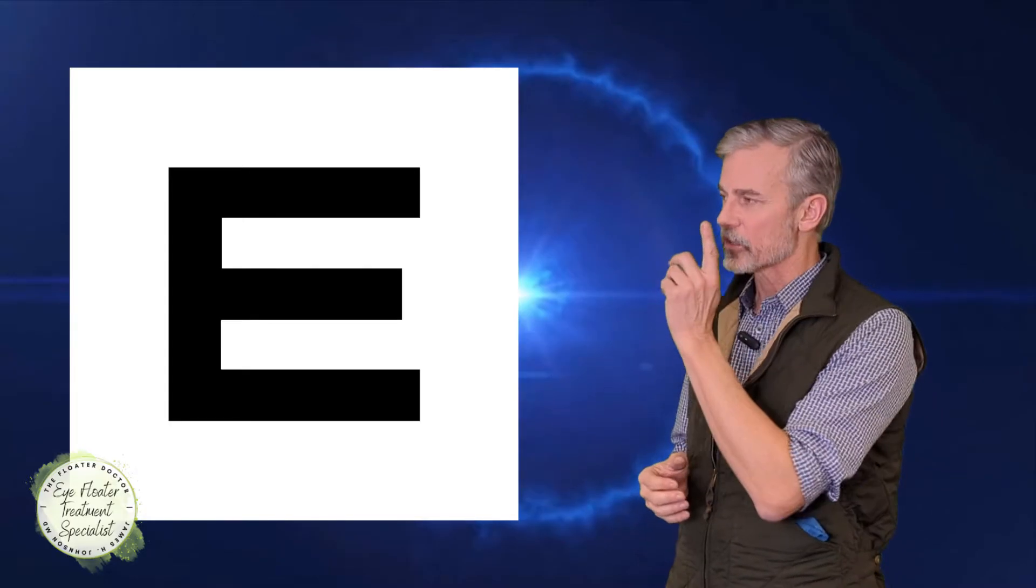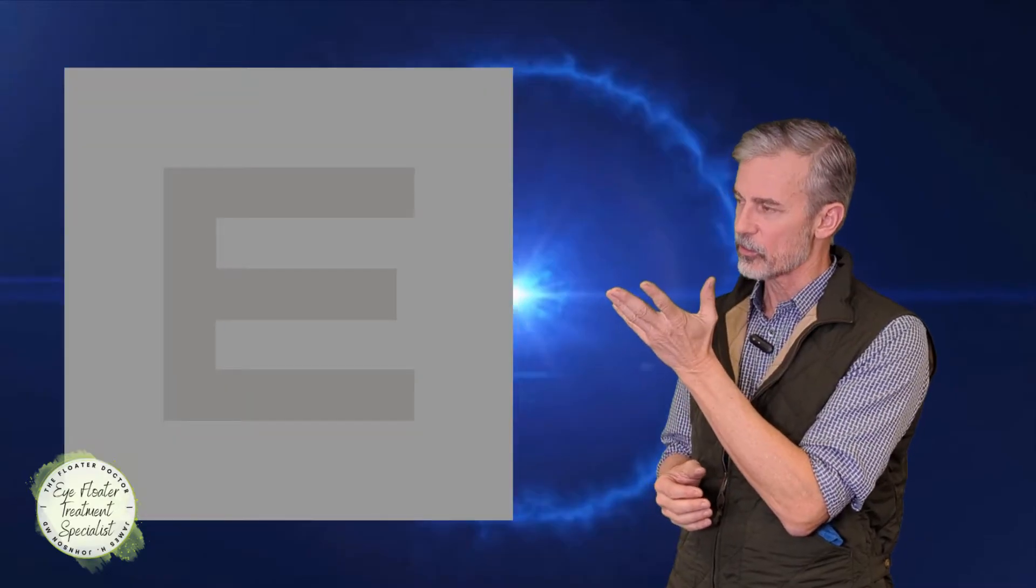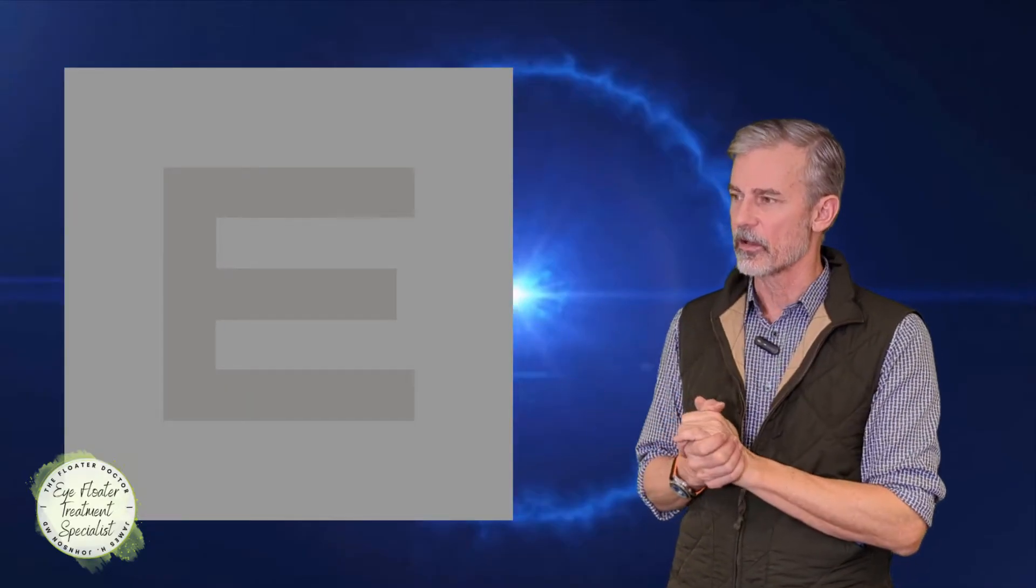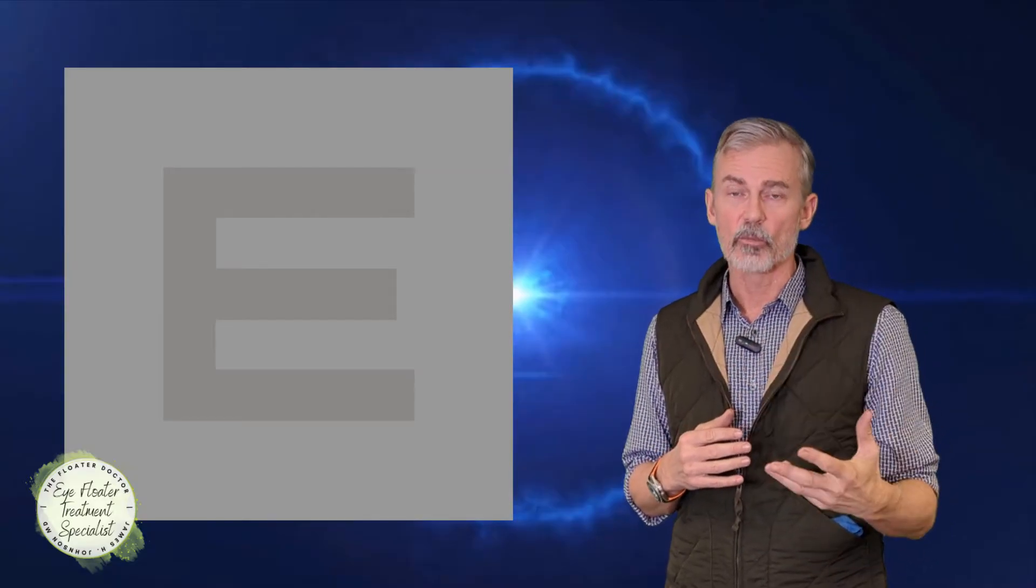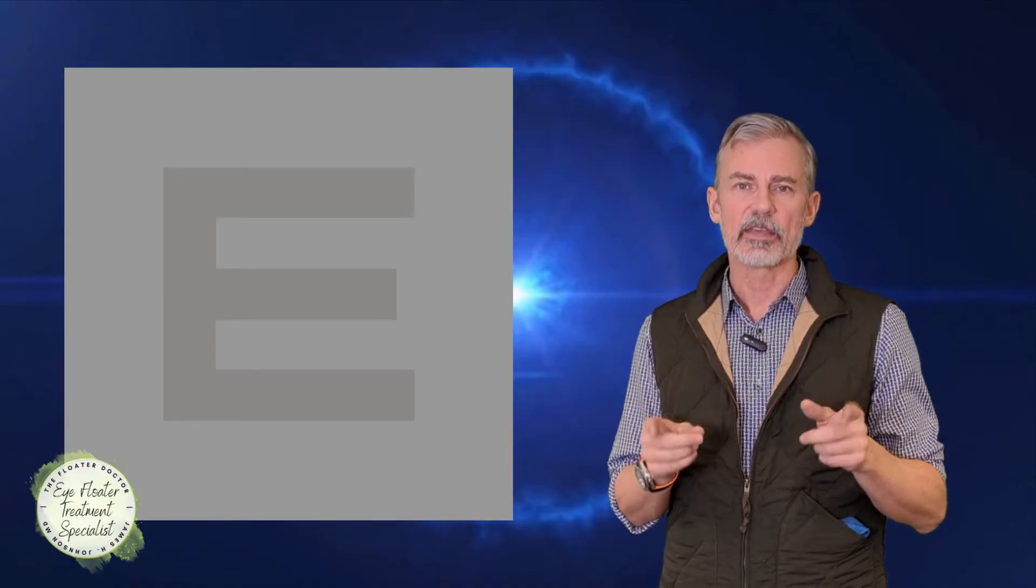What if they were to give you a chart that looks like this? I think this is like 60% gray against a 50% gray background. You start lowering that contrast and it starts to become a lot more difficult. And people who've had a posterior vitreous detachment have even more problems.